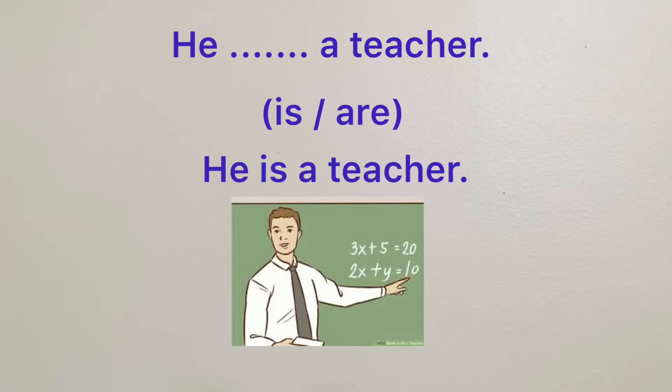Now, I will show you one sentence at a time. Please choose the correct verb in the bracket to complete the sentence. He is a teacher. Is or are? Yes! He is a teacher.